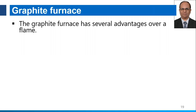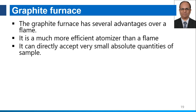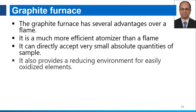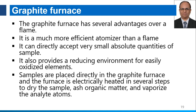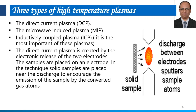I will explain the graphite furnace in detail. The graphite furnace has several advantages over the flame — it is a much more efficient atomizer. It can directly accept very small absolute quantities of sample; we don't need to prepare solutions. It also provides a reducing environment for easily oxidized elements. Samples are placed directly into the graphite furnace and the furnace is electrically heated in several steps to dry the samples, ash organic matter, and vaporize the analyte. A modified form of atomic absorption spectroscopy also uses plasma discharge techniques.